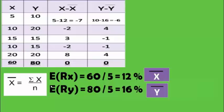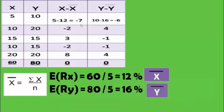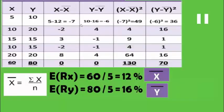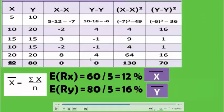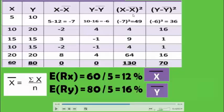Now we need to calculate the standard deviation. It is a 4-step process: first calculate the average return, then calculate the deviation of each return from that average. For stock X, we compute X minus X-bar (12). For example, the first deviation is minus 7. Then we square those deviations — because their sum would be zero — so minus 7 squared equals 49, and 6 squared equals 36.